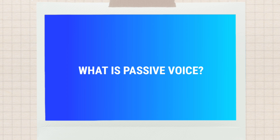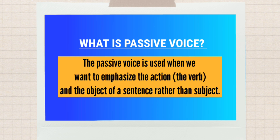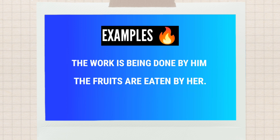Next is passive voice. We use passive voice when we want to emphasize the action and the object of a sentence rather than the subject. For example, 'The walk is being done by him.' You can see here that the object is being emphasized rather than the subject, which was him here.